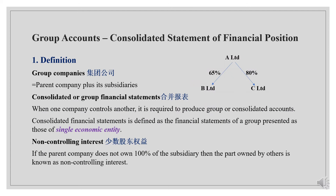Group companies (集团公司) 是指母公司和所有的子公司构成的集团公司. 如果A公司拥有B公司65%的股份和C公司80%的股份，A公司就是母公司，B、C是子公司，ABC公司构成了集团公司.